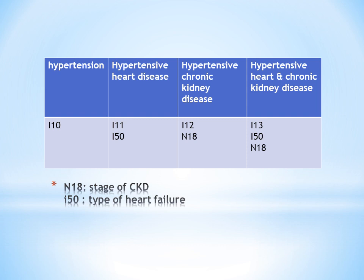Then there is one more combination code: I13, which covers hypertension with both heart and kidney disease. For I13, you can use two additional codes — one to identify the type of heart failure using I50, and one to identify the stage of kidney disease using N18.